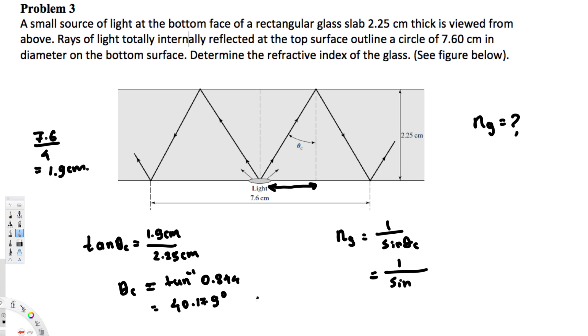So this is going to be 1 over sine, and we know the critical angle, that is 40.179 degrees. And if you calculate this one, you should get 1.55, and that's going to be the index of refraction of this glass.